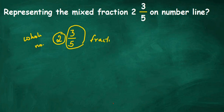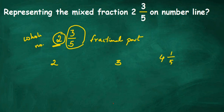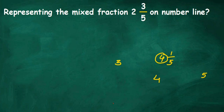All proper fractions lie between 0 and 1. But this mixed fraction has a whole number 2, so this number is going to lie between 2 and 3. For example, if you have a mixed fraction like 4 1/5, then 4 is the whole number, so that number will lie between 4 and 5. You just look at the whole part and the number lies between that number and the next.